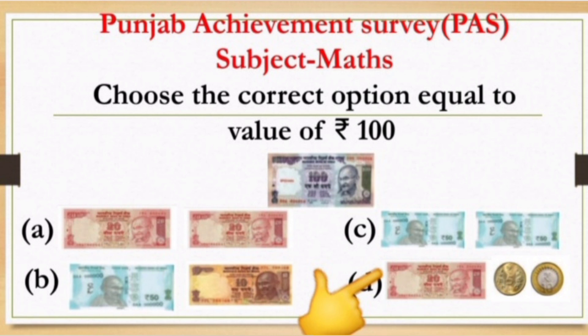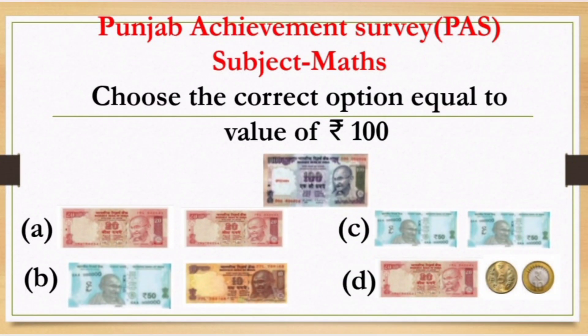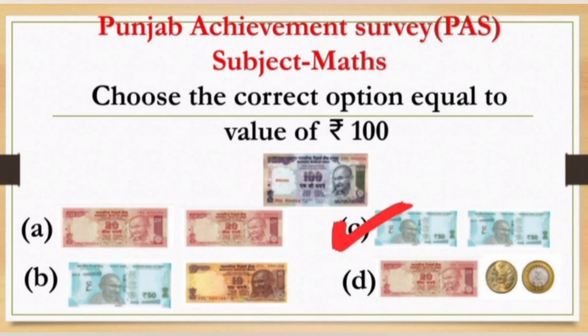Option D has 1 note of rupees 20, 1 coin of rupees 5, and 1 coin of rupees 10. Here in option C, the value of 2 notes of rupees 50 is equal to the value of rupees 100. So our answer is option C.